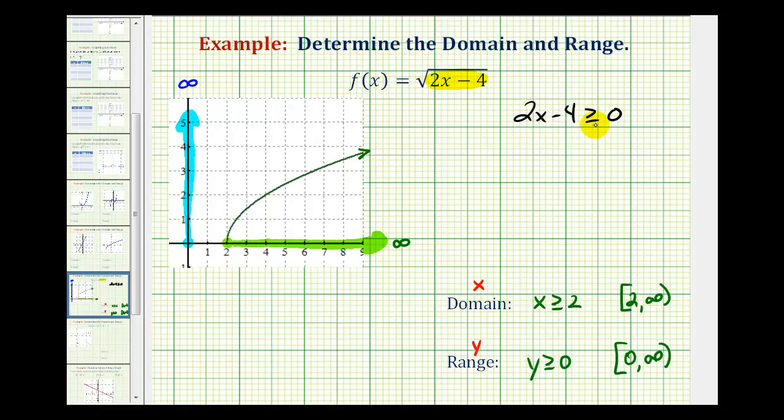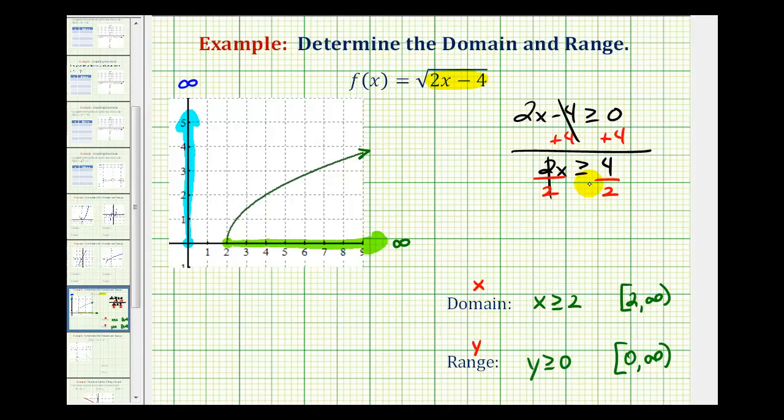we could solve this inequality and find the domain this way as well. So if we add four to both sides, we would have two x is greater than or equal to positive four. And then we divide both sides by two. Notice how we're left with x is greater than or equal to two which actually is the domain of our function